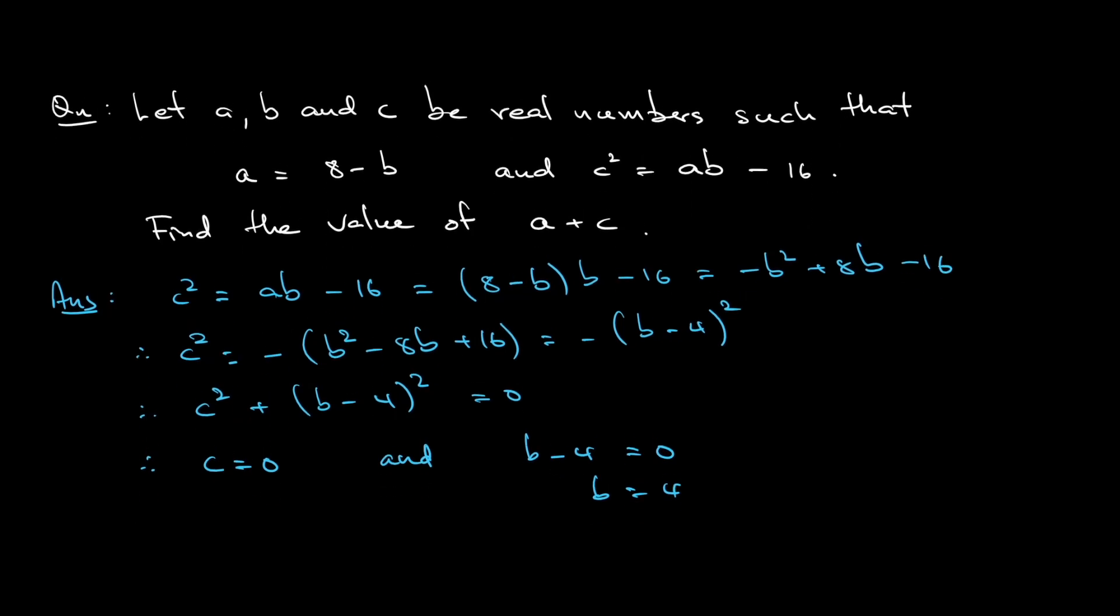We want to find out for a. b is equal to 4 meaning that a is equal to 8 minus 4 and that is 4. So, a is 4, b is 4 and c is 0. The question asks for the values of a plus c. So, 4 plus 0, the answer is 4.